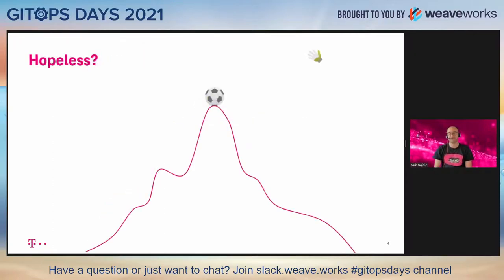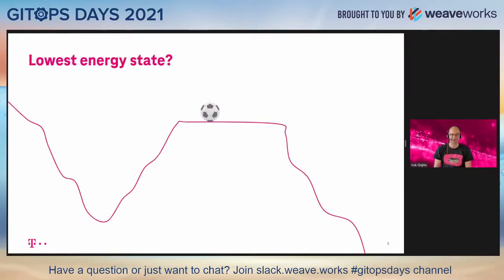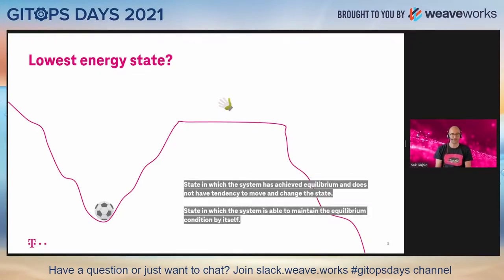Now there can be a worse situation — that seems pretty hopeless, nothing we want our ball to be in. But let us consider another case: you have a ball in a valley. If the force acts on the ball in the direction of the valley, the ball will move, and after a very short time it will reach its state of equilibrium where it is stable. This state in physics is called the lowest energy state. In this state, the system doesn't have a tendency to change. But even if an external force tries to change the state, it has the ability to maintain its equilibrium on its own — quite a calm and good state to be in.